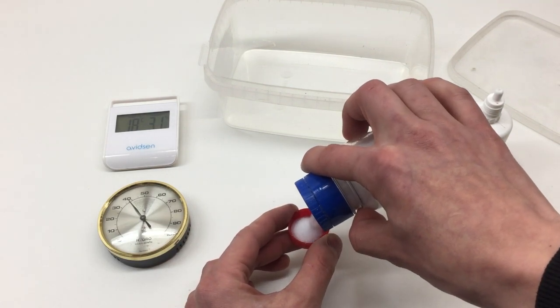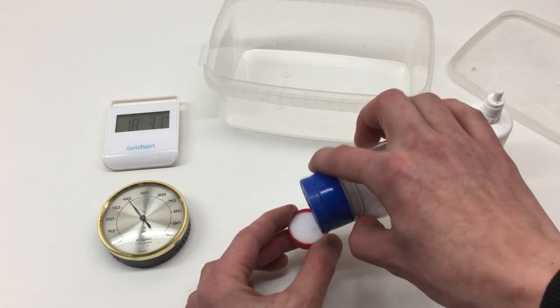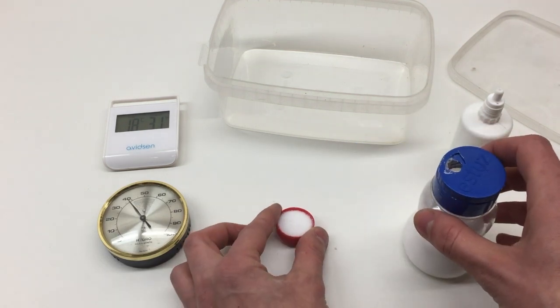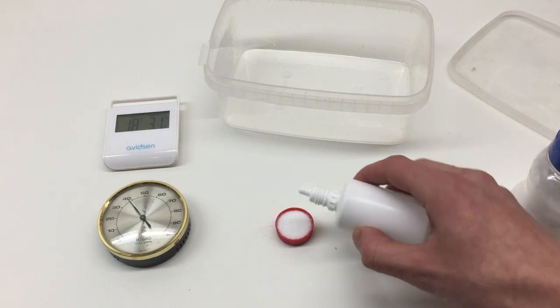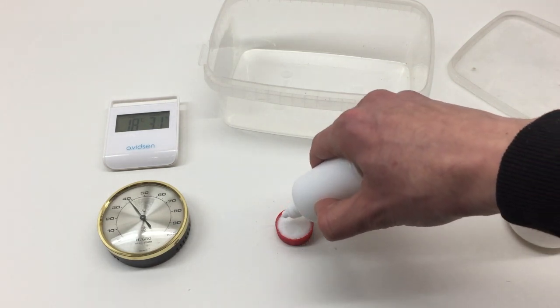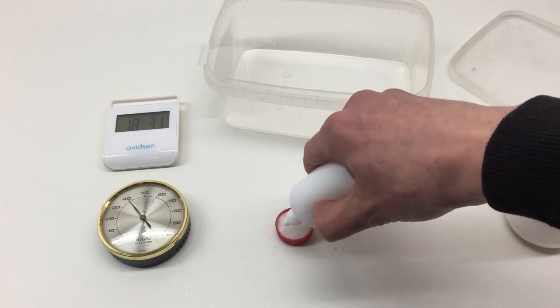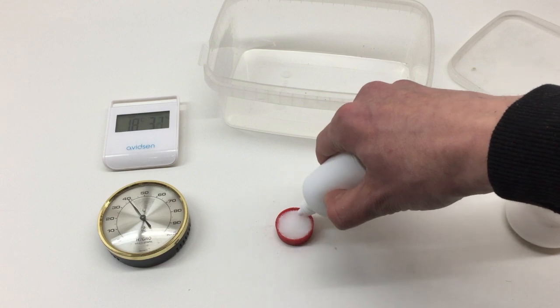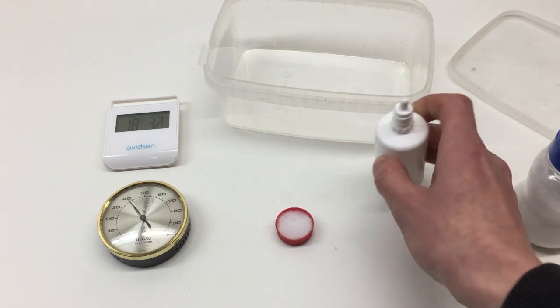So fill the bottle cap up to the top level with salt. Make sure it's nice and level. And then simply add water. Ordinary tap water will do. Make sure it's quite wet but not too wet. You want the consistency of wet sand or so. Don't flood it too much.